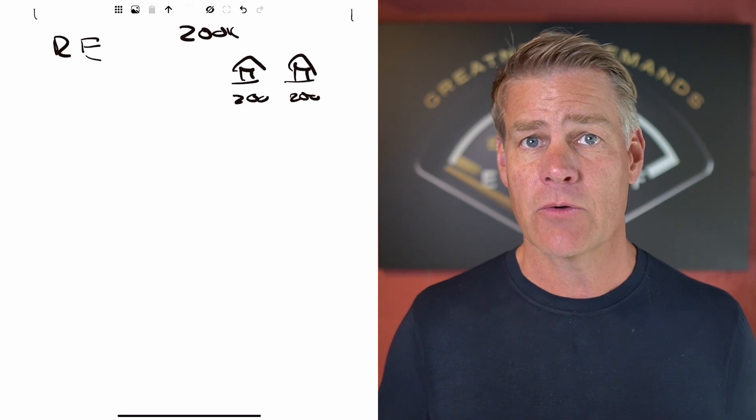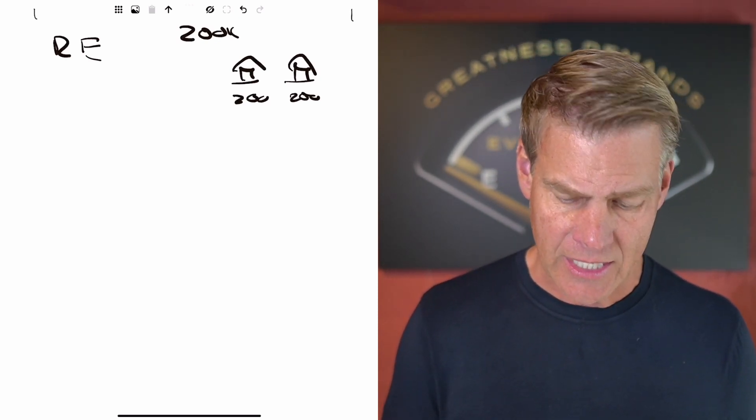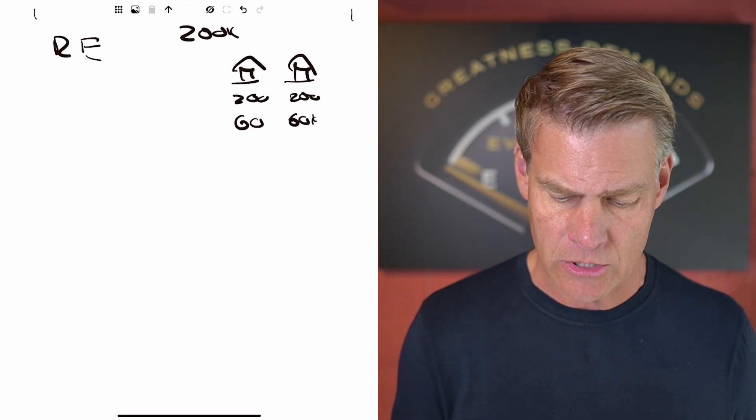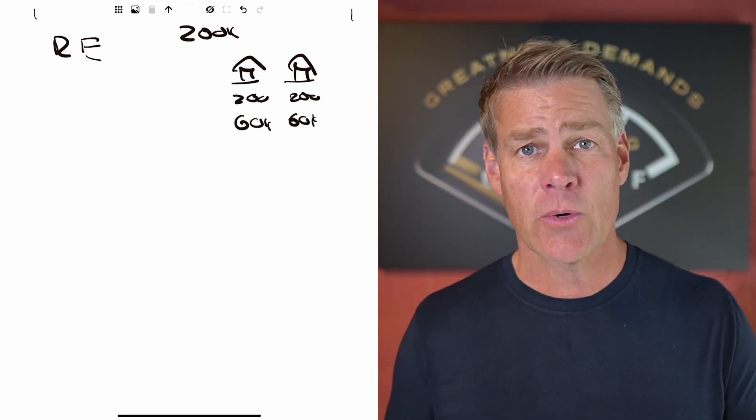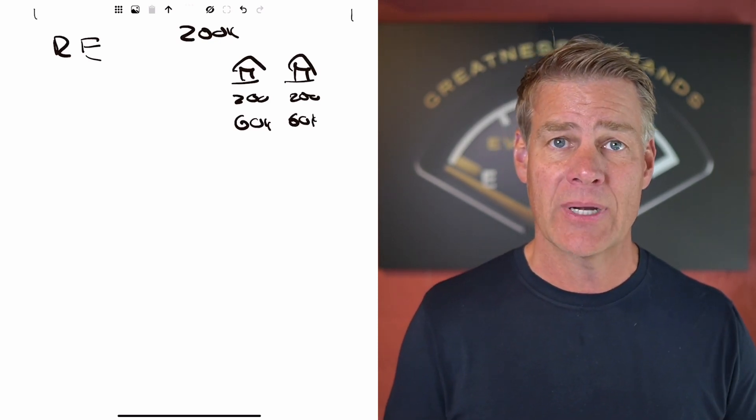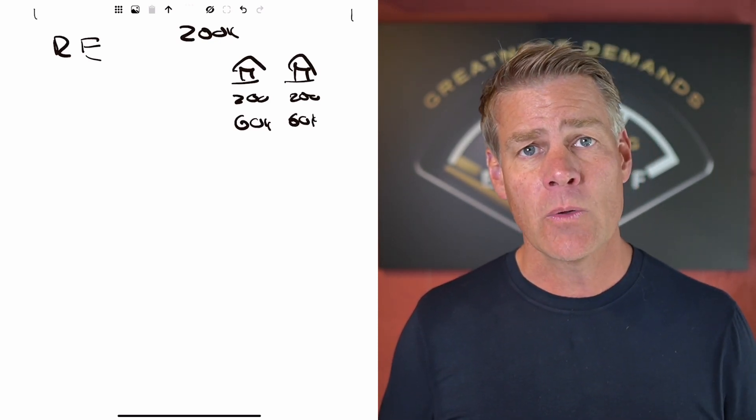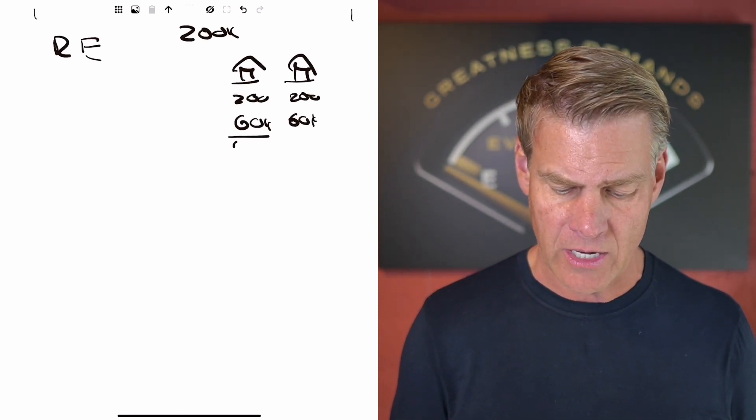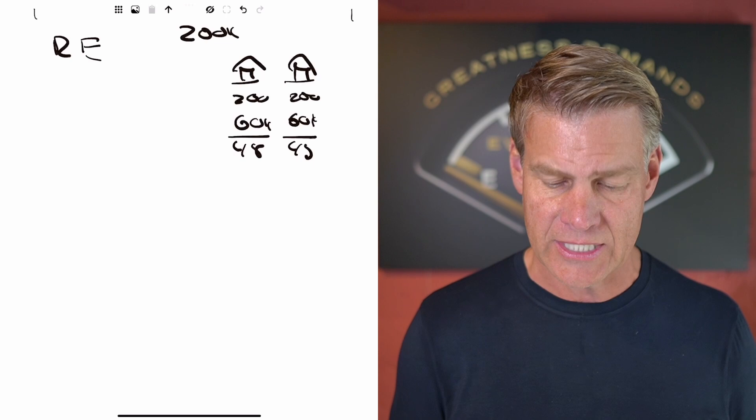So here's the way it works. You buy these two properties. Now, you have a cost segregation study done on these properties, and that cost segregation study is probably going to give you about $60,000 in current tax deductions. Now, because of the year in 2023, if you bought that property this year, then you're only going to be entitled to take 80% of that.